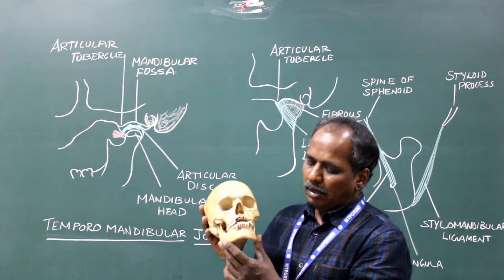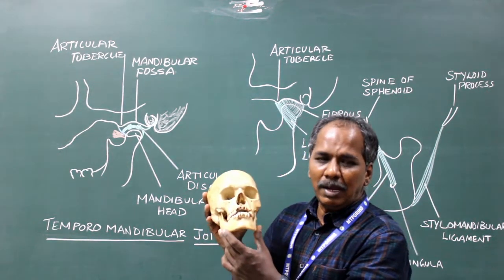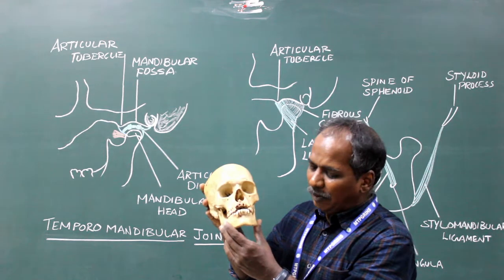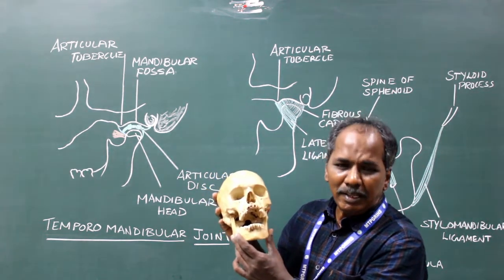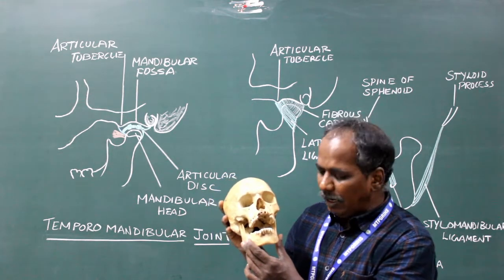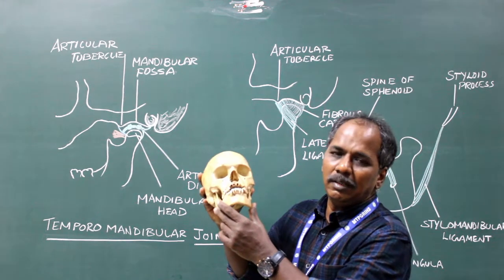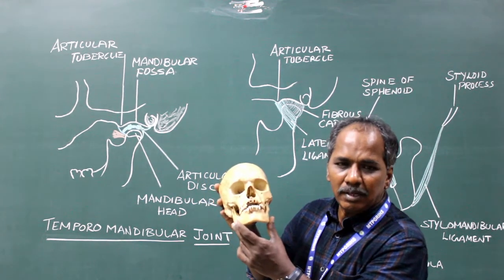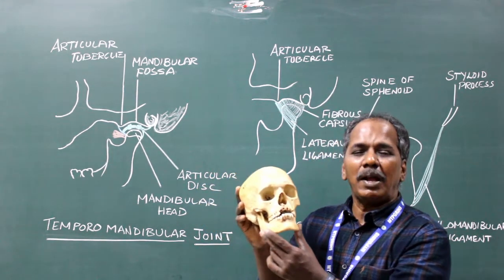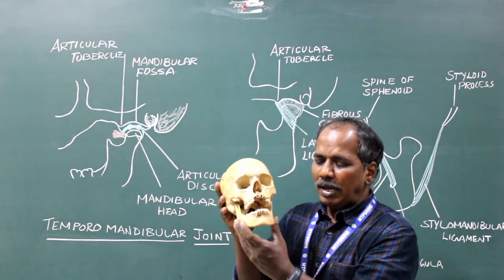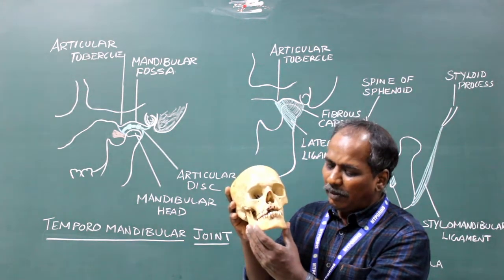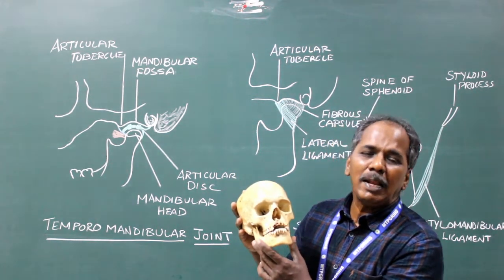Movements of the temporomandibular joint. Depression: the muscles responsible for depression are lateral pterygoid, assisted by digastric, mylohyoid, and geniohyoid. Elevation: the muscles responsible for elevation are masseter, medial pterygoid, and temporalis. Protraction: the muscles responsible for protraction are medial and lateral pterygoid.